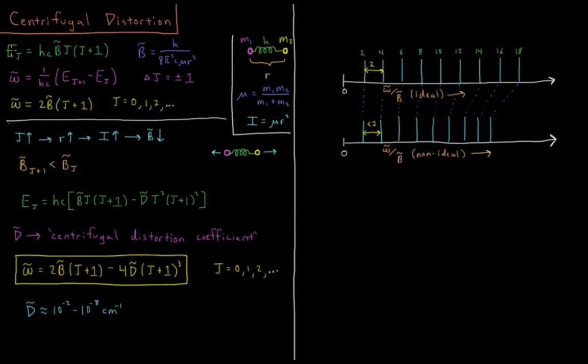The energies of our rigid rotor model, in terms of the quantum number J, is equal to hc times B bar, the rotational constant, times J times J plus 1. B bar, the rotational constant, equals Planck's constant divided by 8 pi squared, speed of light in centimeters per second, times mu, reduced mass, times R, bond length squared.